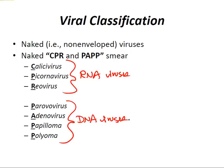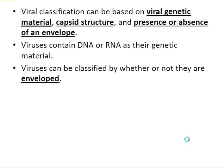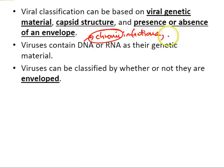Viral classification can be based on genetic material, capsid structure, and the presence or absence of an envelope. DNA viruses tend to cause chronic infections and may reactivate. RNA viruses tend to cause acute illness, especially outbreaks in crowded or unsanitary conditions such as daycare centers, schools, or cruise ships. Inhibitors of viral nucleic acid synthesis are specific to DNA viruses, so knowing which viruses are DNA viruses predicts drug therapy efficacy.